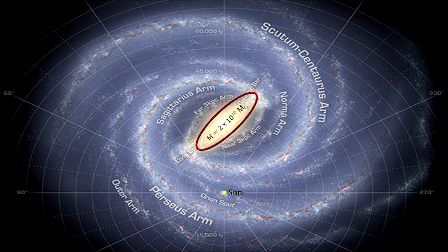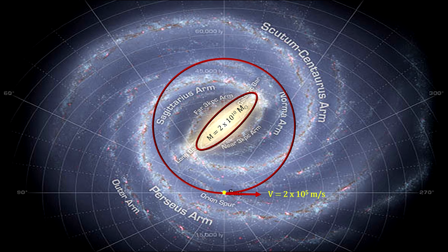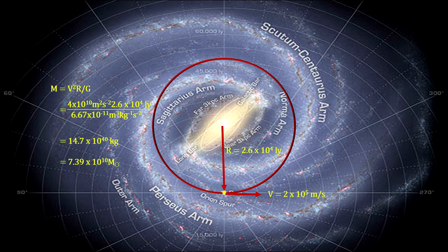For instance, it is estimated that the mass of the central bulge of the Milky Way is 20 billion solar masses. The velocity of the Sun around the center of the galaxy is 200 kilometers per second, and its distance from the center is 26,000 light years. So the mass of the galaxy's interior to the Sun's orbit is approximately 74 billion solar masses — a good deal more than the bulge itself.